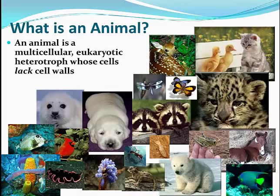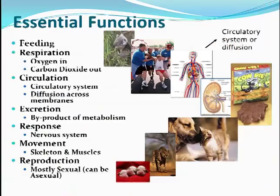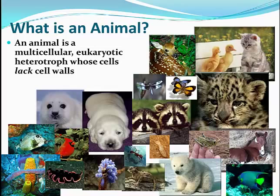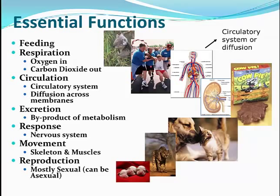So what is an animal? An animal is multicellular, which means it has more than one cell. It is eukaryotic, meaning the cells are complex and have organelles, and it is a heterotroph whose cells lack cell walls. Heterotroph, quick review, means we have to get our food — we can't make it like plants do.